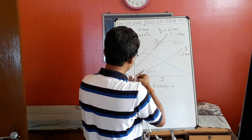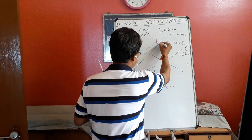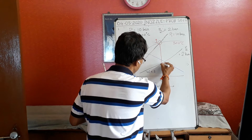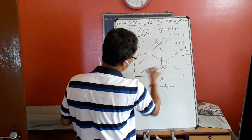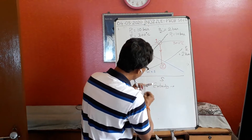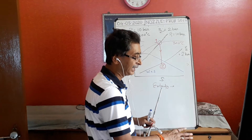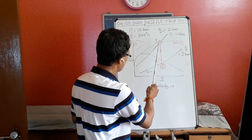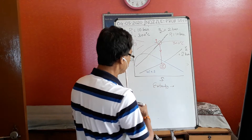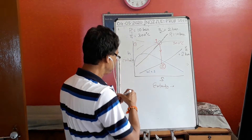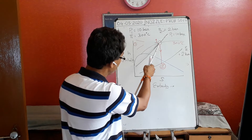Since nothing is mentioned about losses, I assume the expansion is isentropic — that is, entropy remains constant. So the steam drops from point one straight down to the 2 bar pressure line at point two. The expansion in the nozzle has taken place isentropically from P1 to P2, from point one to point two.